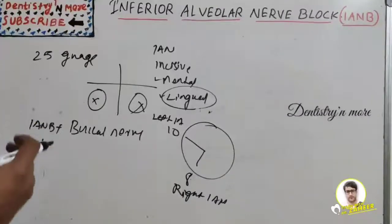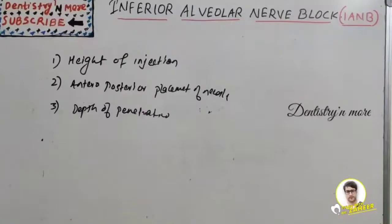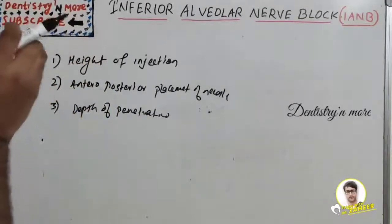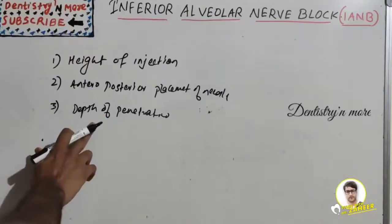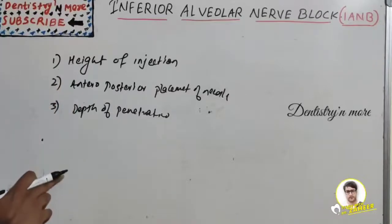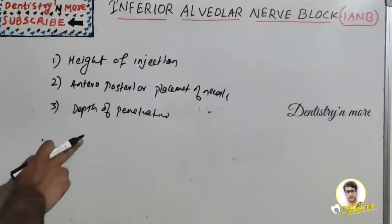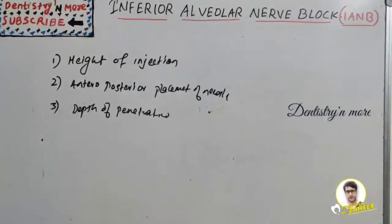There are three parameters that must be considered during the administration of IANB: the first is the height of injection, the second is the anterior-posterior placement of the needle (which helps locate the precise needle entry point), and the third is the depth of penetration (which determines the location of the inferior alveolar nerve).